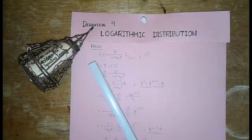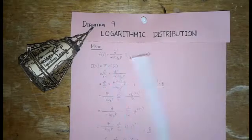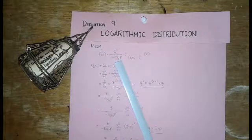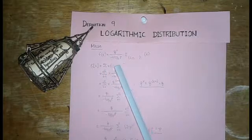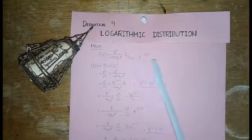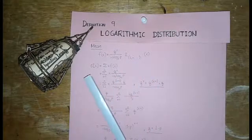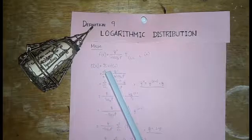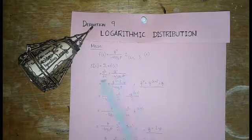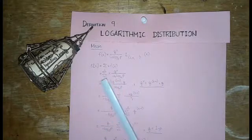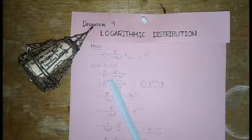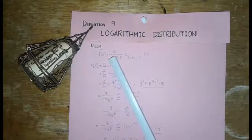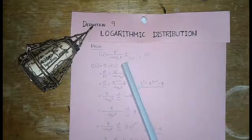Our main aim here is to show how we derive the value of the mean. From the given definition, f(x) = q^x over negative x log(p) base e, with indicator x = 1, 2, to infinity. Our formula for the mean is E(x) = summation of x times f(x) = summation of x times q^x over negative x log(p) base e.